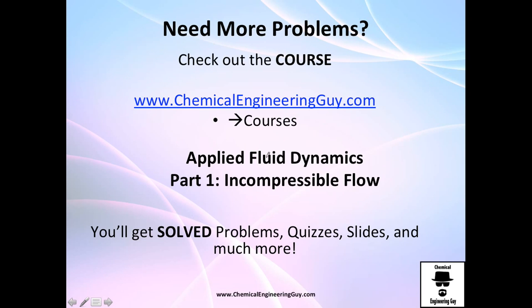This was an overview or introduction to the friction factor. Now that we know what it is, we need to know how to calculate it depending on the variables we'll be using, which is velocity, essentially Reynolds number, and the material of the pipe, which is relative roughness. You can go check out part number one, incompressible flow, on the applied fluid dynamics course, and check out solved problems, quizzes, slides, and much more. Especially the quiz section will ask you a lot about Fanning and Moody's friction factor.